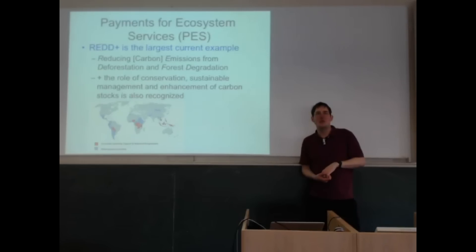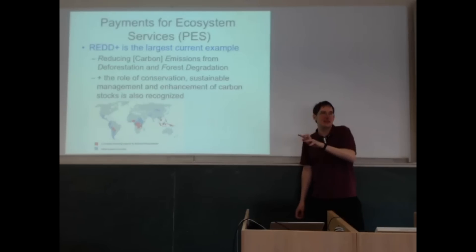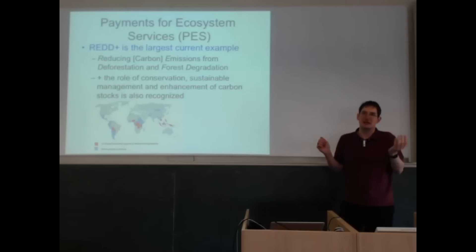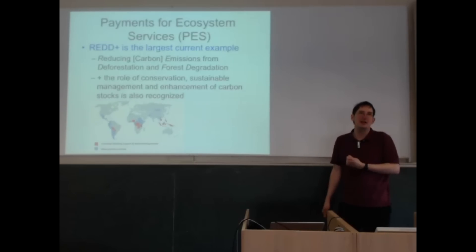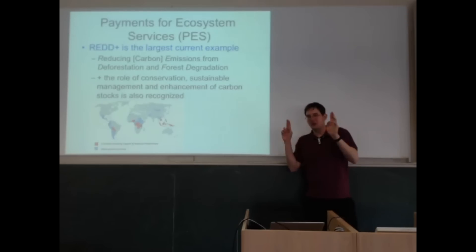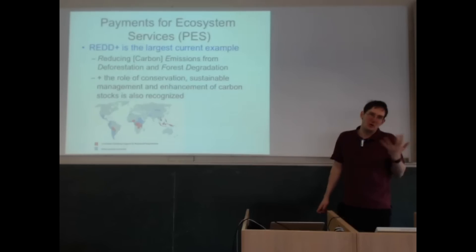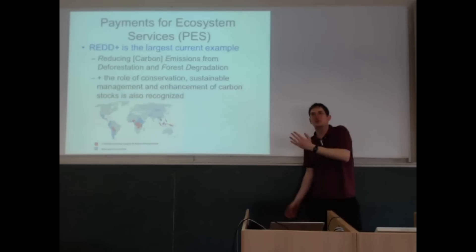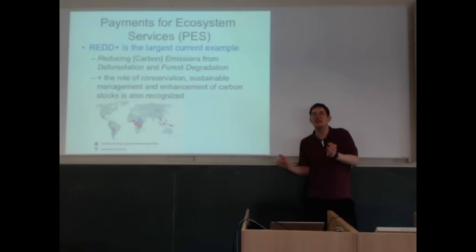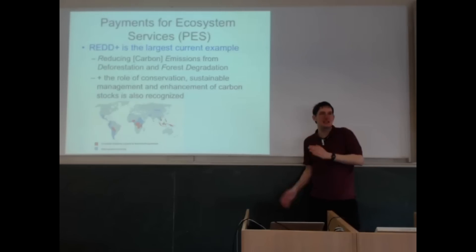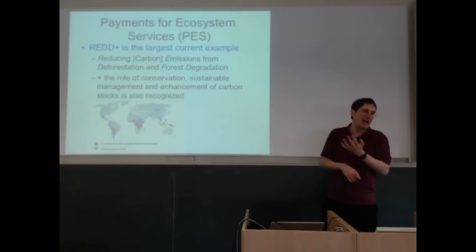Nestlé has a similar example — one of their name-brand waters comes from a spring in France. They realized farmers above the spring were putting too much nitrogen on the ground, risking the spring having too much nitrogen. Under French law, they can't filter it otherwise it isn't a mineral water anymore. So Nestlé invested money to help farmers shift from nitrogen-intensive farming to low-intensity farming — basically old-style grazing — effectively paying farmers to maintain the purity of the spring. These things can exist at quite small or quite large scales and don't have to be just in tropical countries.